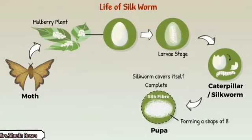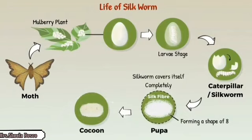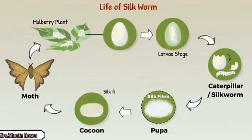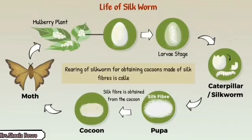These fibers are what we take as silk. This stage we call the pupa stage. Once the pupa stage and the threading are over, we call it a cocoon. We take the cocoon, and the moth will come out. Then we take the silk thread and weave it for a silk sari or whatever material. The rearing of silkworms is called sericulture.